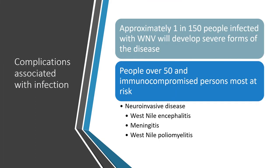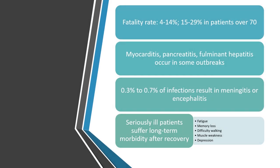Approximately 1 in 150 people infected with West Nile Virus will develop severe forms of the disease. People over 50 and immunocompromised persons are most at risk for neuroinvasive disease, including West Nile Encephalitis, Meningitis, and West Nile Poliomyelitis. The fatality rate is between 4 and 14%, rising to 15 to 29% in patients over 70. Myocarditis, pancreatitis, and fulminant hepatitis occur in some outbreaks. 0.3 to 0.7% of infections result in meningitis or encephalitis. Seriously ill patients may suffer long-term morbidity after recovery, including fatigue, memory loss, difficulty walking, muscle weakness, and depression.